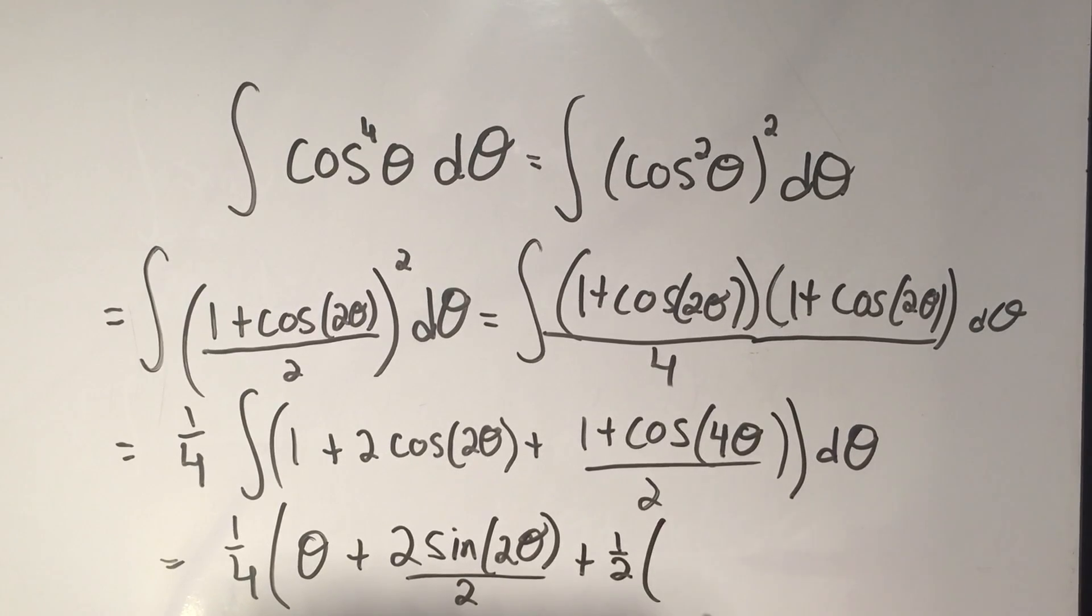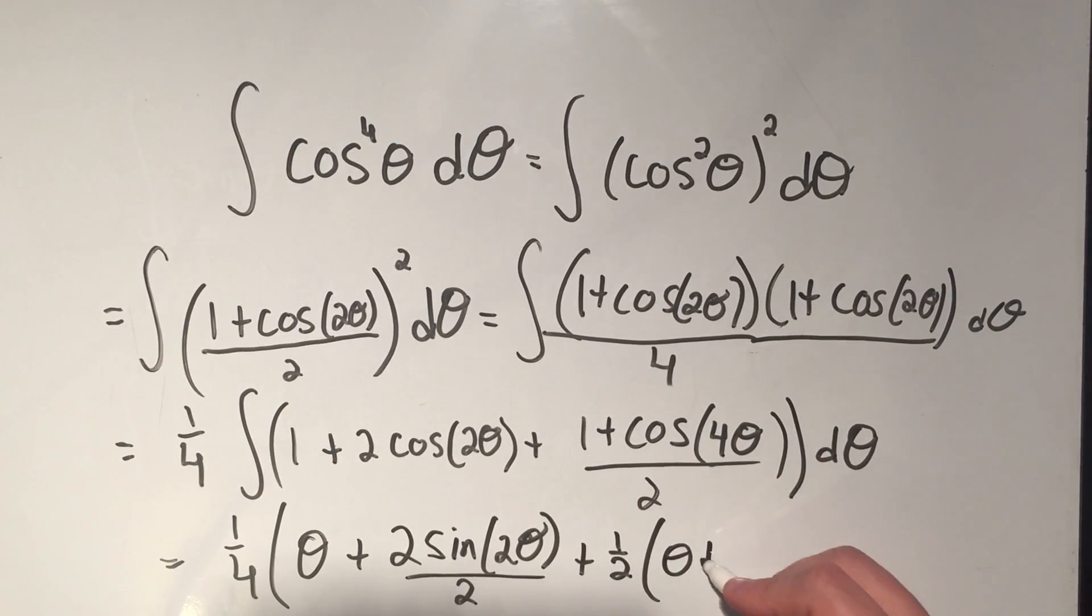I'll keep this 1 half out front. The antiderivative of 1 is theta. The antiderivative of cosine 4 theta is sine of 4 theta over 4.